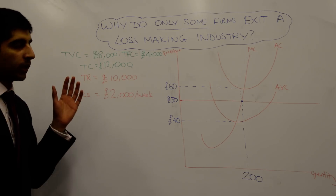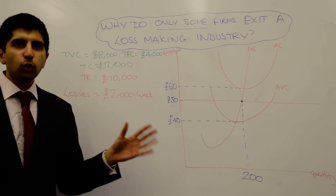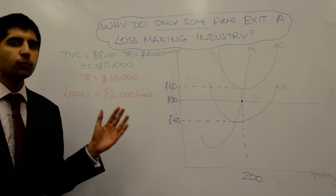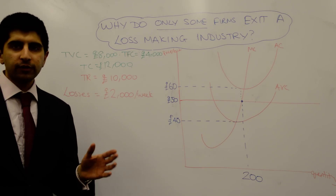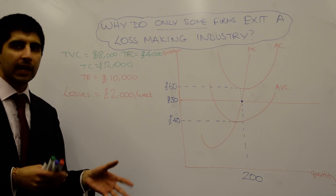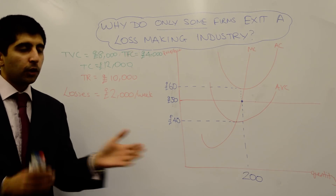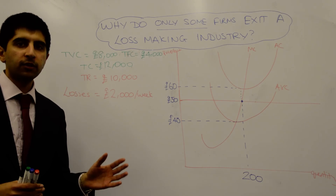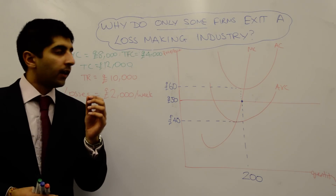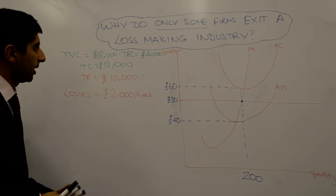A question that comes up quite a lot when we analyse a perfectly competitive market structure is: why, in the short run, when firms are making sub-normal profits or economic losses, why do only some firms leave the industry? It makes logical sense that all firms would leave the industry if sub-normal profits were being made. But when we shift the supply curve to the left, we're only shifting it a little bit — we're not eradicating supply completely. Some firms stay. So why do some firms stay and some firms leave? Let's understand what is actually occurring for firms to stay or leave when losses are being made in the short run.